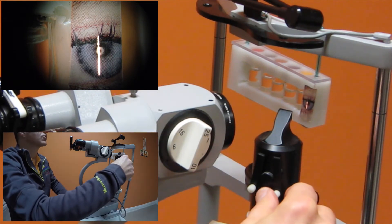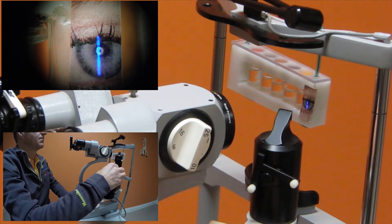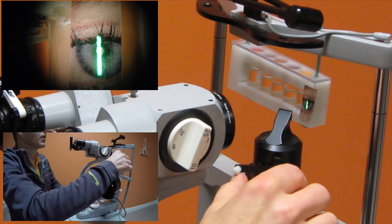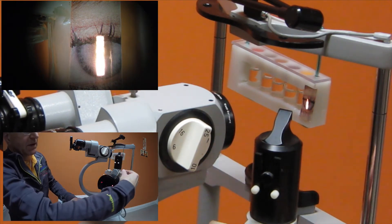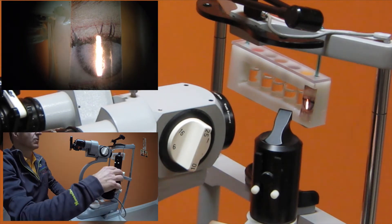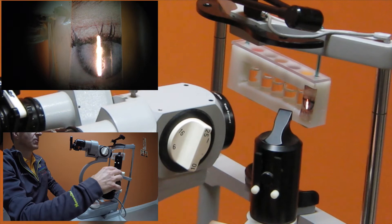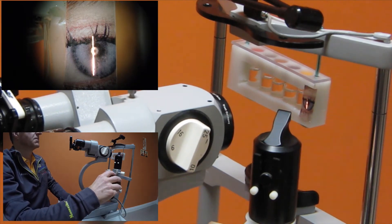Now, we can also change the beam to being a blue cobalt blue beam or a red free beam from the top. Again, center that. We have a nice wide beam at this point, nice tall beam. We'll make that smaller again. The beam can be rotated.